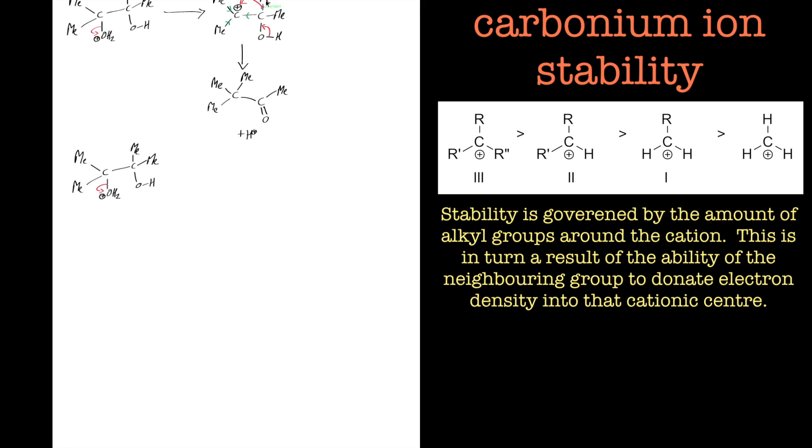Hi, so just following on from part one of this tutorial, we looked at the stability of the intermediate—really the carbonium ion that's formed when we lose the first molecule. The water molecule's a good leaving group.